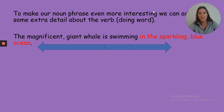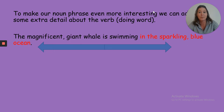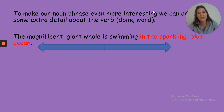We could leave it at that, but we want to give the reader more information and let them use their imagination to picture our whale. So we can expand the sentence: the magnificent giant whale is swimming in the sparkling blue ocean. The reader can now close their eyes and picture a very large magnificent whale in a sparkling blue ocean. From a very simple sentence we've created an expanded noun phrase, with sparkling and blue as the two adjectives describing the ocean.